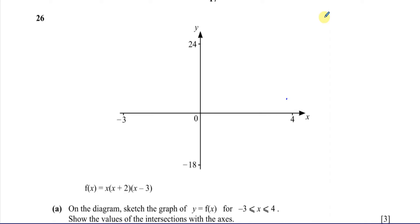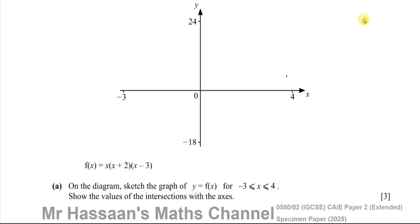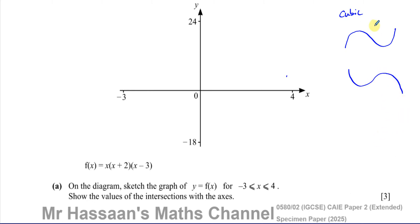So this is a cubic graph. Cubic graphs can either have this type of shape — up, then down, then up again — or they go down, then up, then down again. What determines whether it's this shape or that shape? It is the coefficient of x cubed. If we expand the brackets, you'll have x times x times x, so it'll be a positive x cubed, which means it's going to be the up-and-up shape.